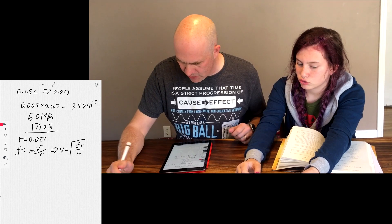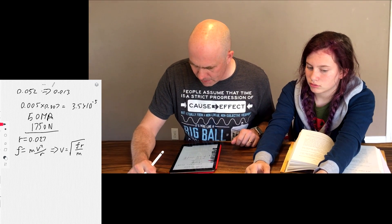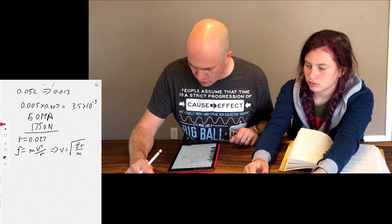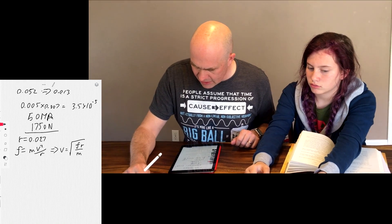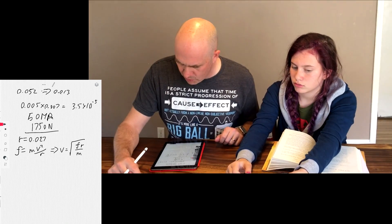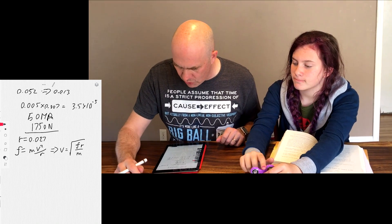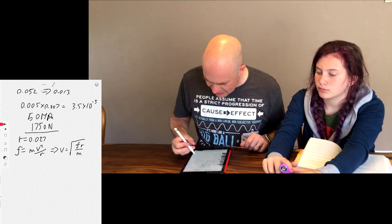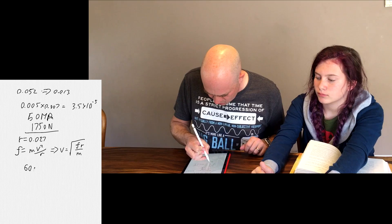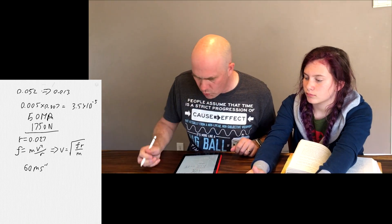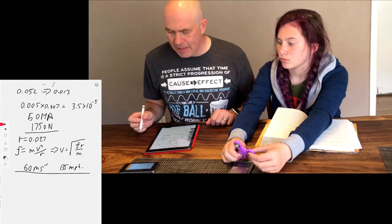So we have all those numbers. The force is 1750. Multiply that by the radius, which is 0.027, and then divide that by 0.013. That gives me 3634. And if I take the square root of that, I get 60 meters per second.